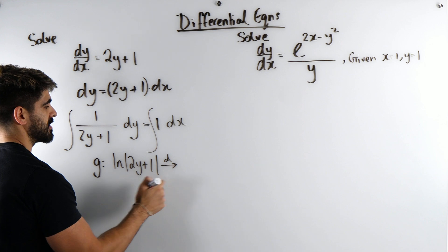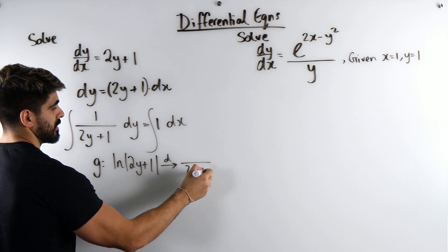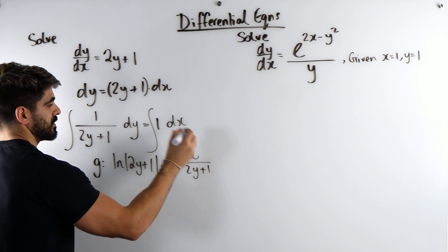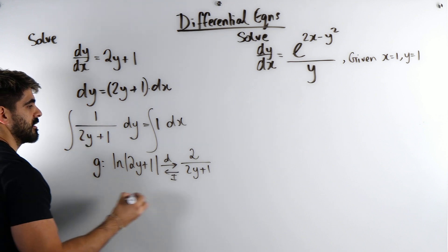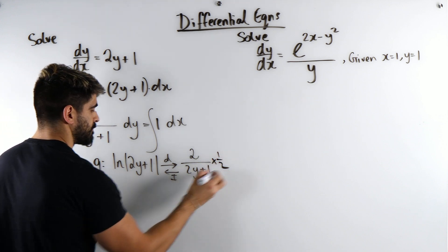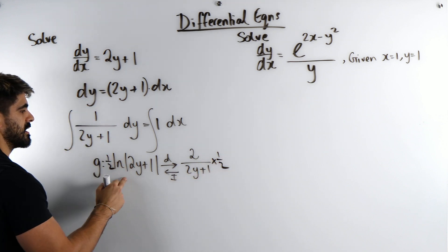To differentiate this, ln reciprocates this. So we get 2y plus 1. Differentiate this to go to the top is 2. So this integrates back to this, but there was no 2 here. So we get to half both sides.